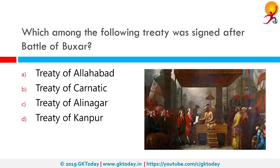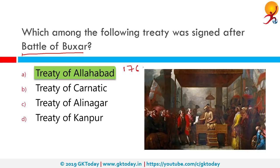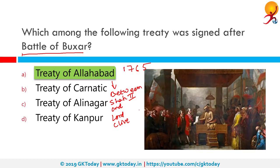Which among the following treaties was signed after the Battle of Buxar? The important outcome was the Treaty of Allahabad, signed on 16th August 1765 between Lord Clive and Mughal Emperor Shah Alam II. The Battle of Buxar led to Shah Alam II submitting to the British. As per this treaty, the Mughal Emperor granted fiscal and administrative rights — including rights to collect taxes — to the East India Company.